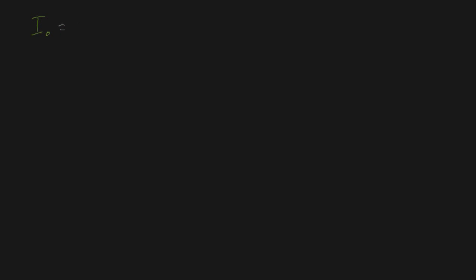Hey guys, in this particular video I'm going to be formally proving the parallel axis theorem, which states that the moment of inertia about a point O is equal to the moment of inertia around an object's center of mass plus the mass of that object which is rotating, times by d squared, where d is the distance between these two parallel axes.